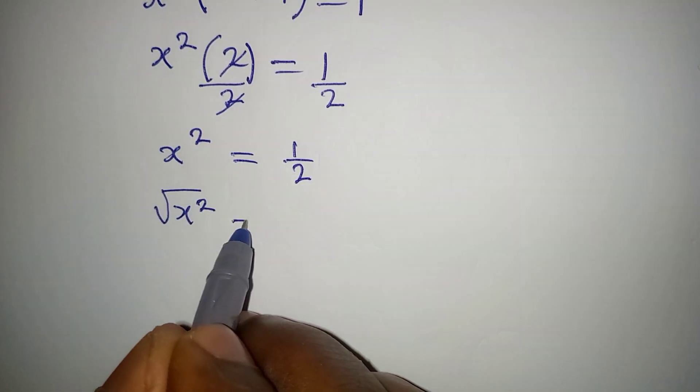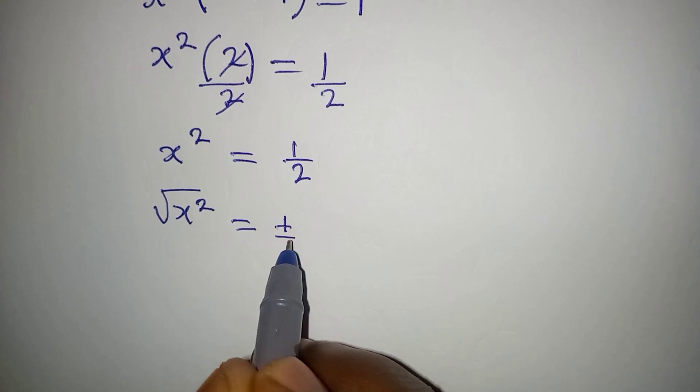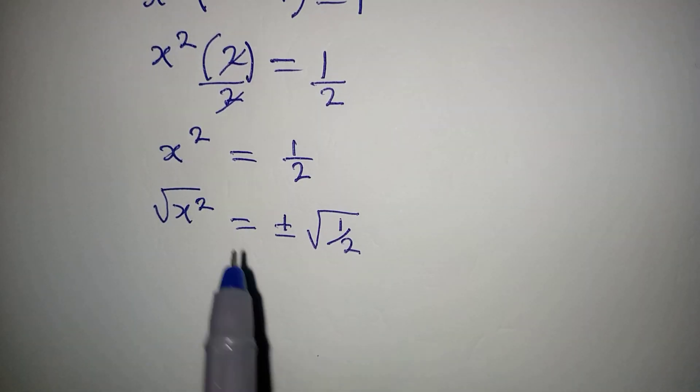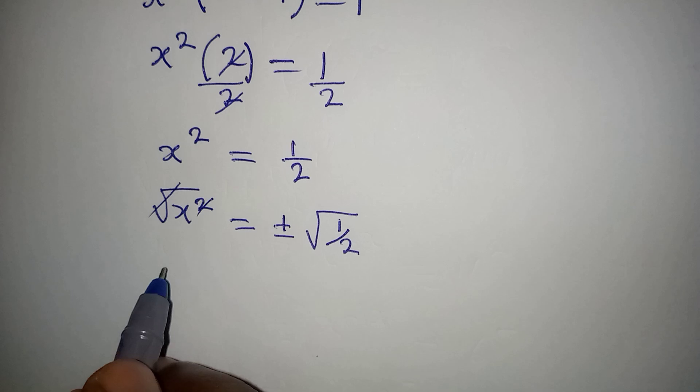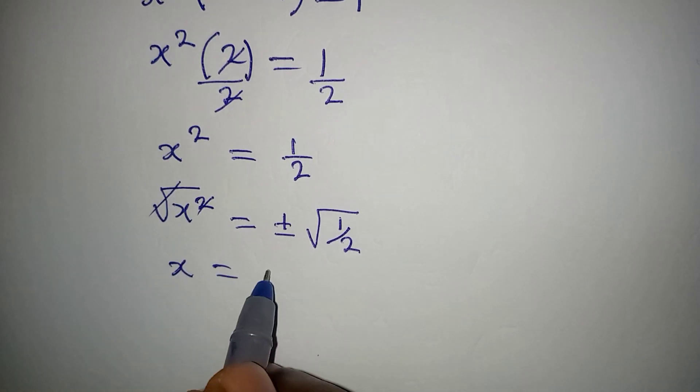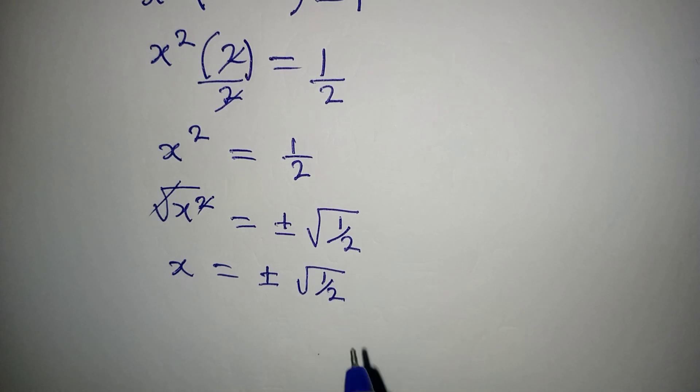So this will now be equal to plus or minus square root of 1 over 2. Now this and this will be gone, and then x is equal to plus or minus square root of 1 over 2.